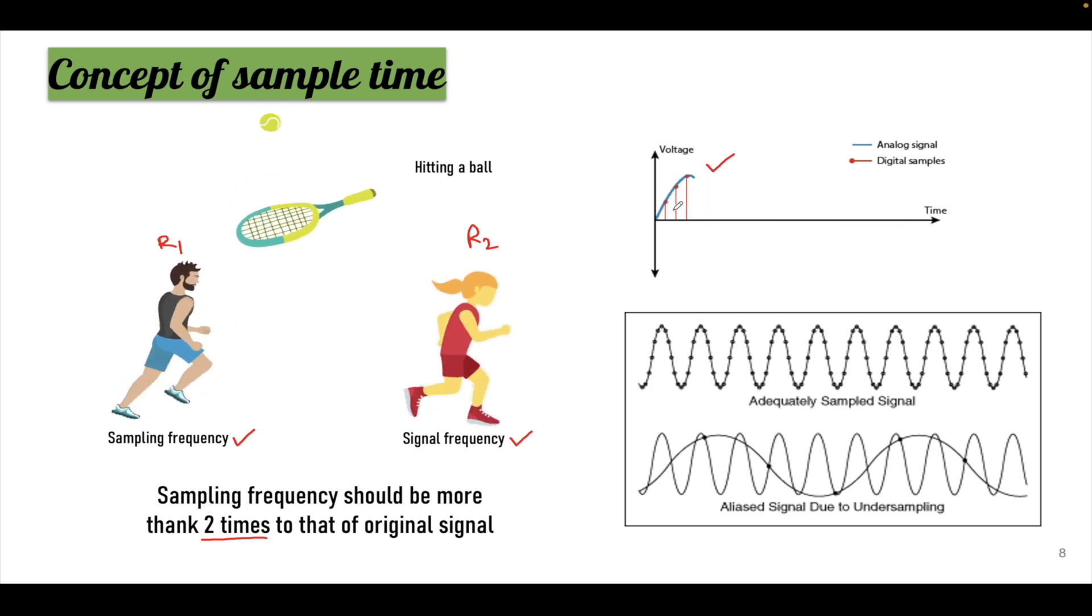If the gap between these two is reducing then your sampling frequency is increasing. If the gap between those two samplings is increasing then the frequency of sampling is decreasing. This represents the sampling frequency.